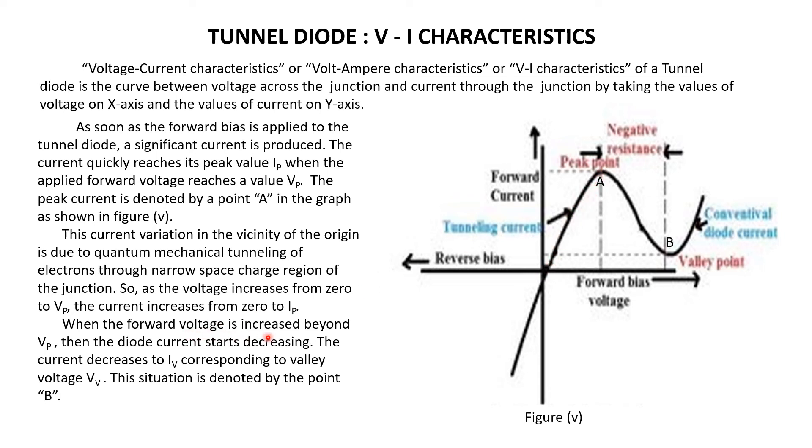When the forward voltage is increased beyond this value Vp, the voltage increases slowly. If the value increases beyond Vp, then the current decreases. As you can see in this graph, the current decreases and this point is said to be valley point.